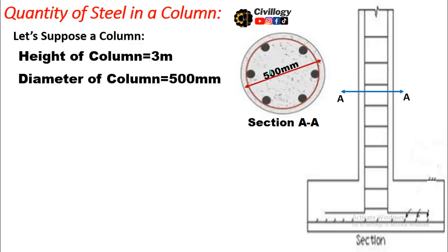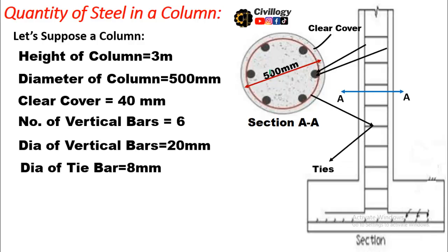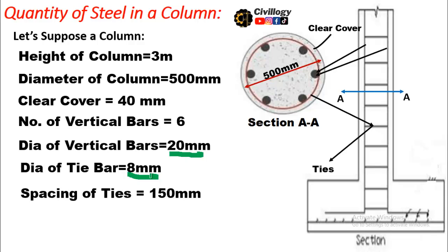The diameter of the column is 500 millimeters, the clear cover provided is 40 millimeters, and the number of vertical bars is 6 — the minimum required for a circular column. The diameter of vertical bars is 20 millimeters, the diameter of tie bars is 8 millimeters, and the spacing of ties is 150 millimeters.